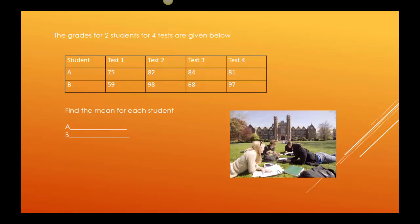So what we're going to start with is finding the mean for each of the students just to say, hey, what's their test average? How are they doing this semester? So we remember that the mean is just add up the scores. So I'm going to add 75, 82, 84, and 81, divide by four. Then I'm going to add 59, 98, 68, and 97, and divide by four.